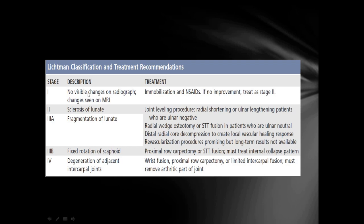Treatment modalities: In Stage 1, immobilization and NSAIDs; if no improvement, treat as Stage 2. In Stage 2 and 3A, joint leveling procedures such as radial shortening or ulnar lengthening for ulnar negative variance, radial wedge osteotomy or STT fusion for ulnar neutral patients, distal radial core decompression, and revascularization procedures. In Stage 3B, fixed rotation of scaphoid may require proximal row carpectomy or STT fusion. In Stage 4, wrist fusion, proximal row carpectomy, or limited intercarpal fusion removing the arthritic joint.